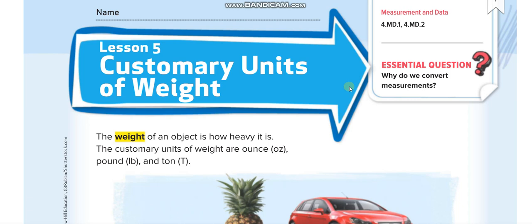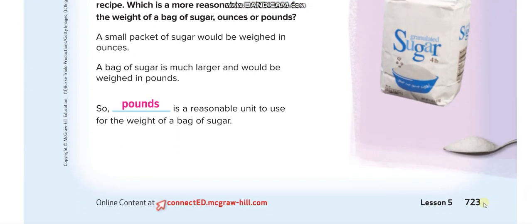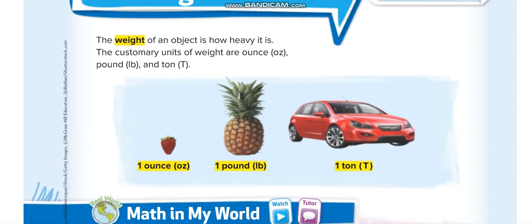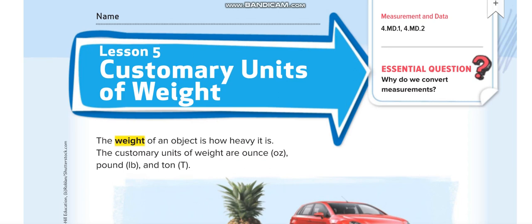Hello everyone, welcome back to another video lesson. Today's lesson for Grade 4, Chapter 11, Lesson 5: Customary Units of Weight, page number is 723. Before starting today's lesson, don't forget to subscribe to my channel, Learn Math with Mr. Saad, and press the bell icon to get notified for every new video.